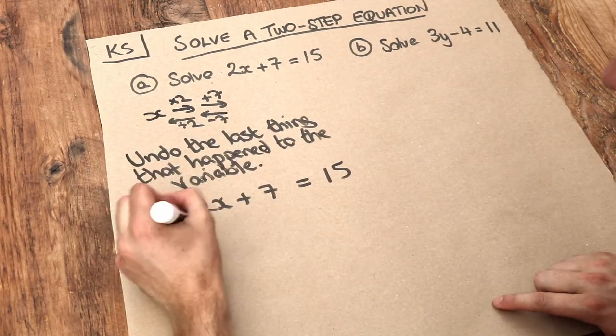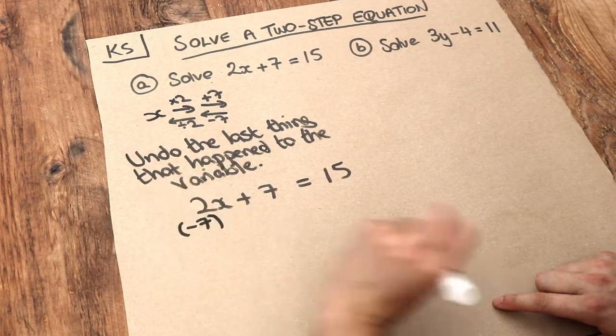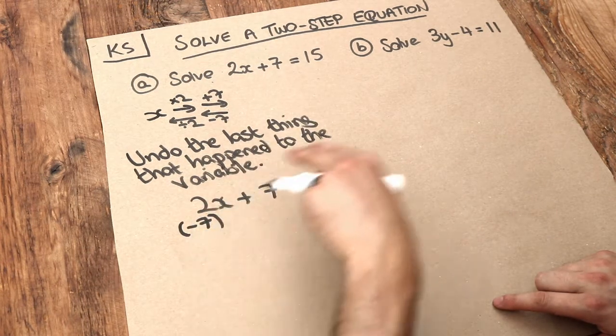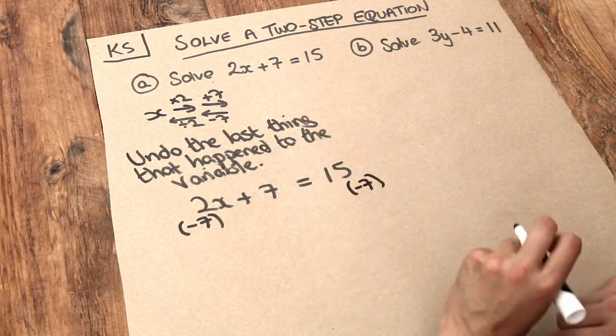Remember, we do the opposite to get rid of it. We minus 7 from the left-hand side, but whatever we do to the left-hand side, we have to do the same to the right-hand side. So we minus 7.